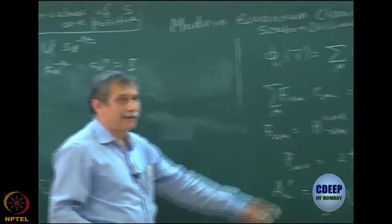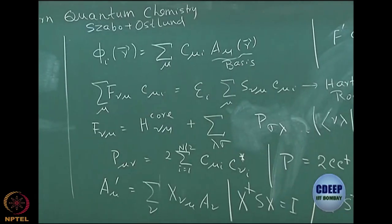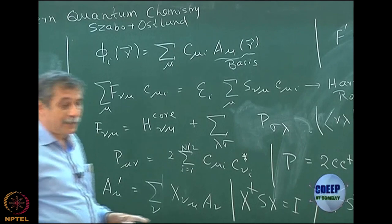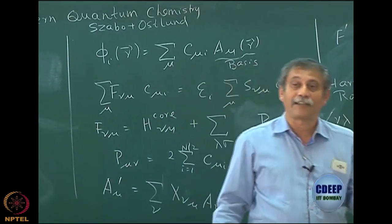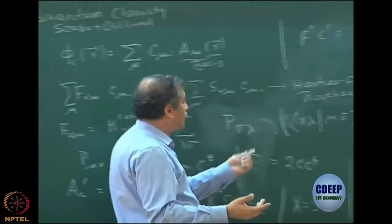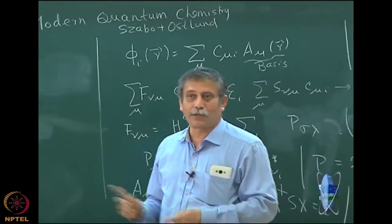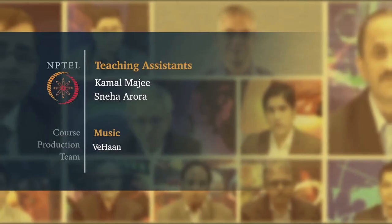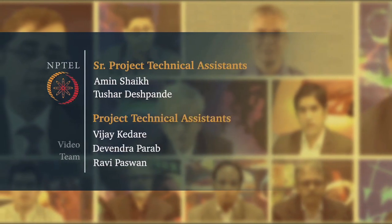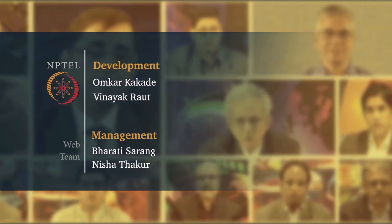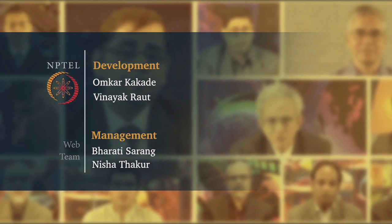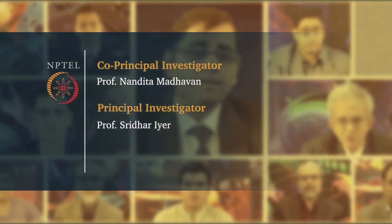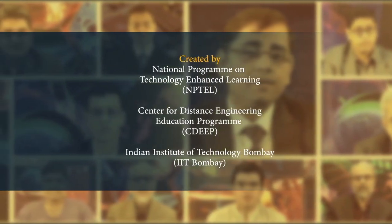Let me come back to the analysis of the P matrix. Please remember that Szabo and Ostlund use different symbols: spin orbitals are chi, molecular orbitals are psi instead of phi, and the basis is phi instead of A. Mulliken notation is simple — interchange the second and third index. So you can always go back and forth between the two notations. Most of the content follows that textbook.